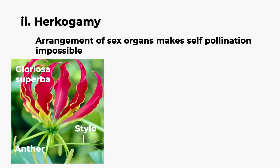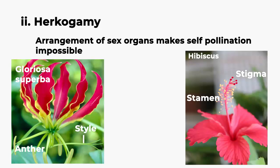Another example of herkogamy is Hibiscus. In Hibiscus, the stigmas project far above the stamens, so pollen from the same flower cannot easily deposit on the stigma. Therefore, it gets pollinated from another flower.